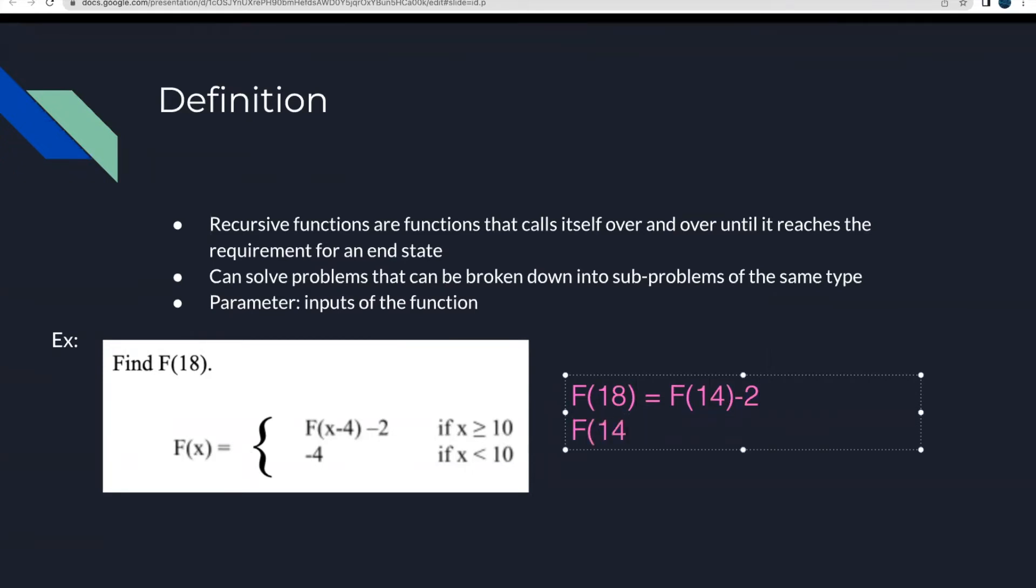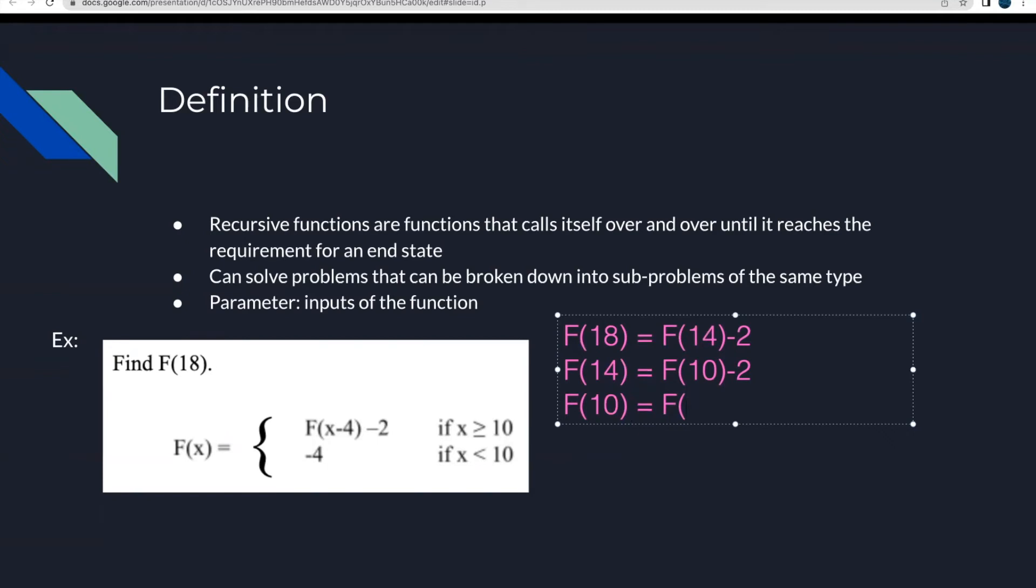And then we're going to keep going until we can solve all these function calls, of course. So F of 14, 14 is still greater than or equal to 10. So we're going to call, we're going to do this call again. And then F of 10 is still greater than or equal to 10. So we're going to call this one more time. And then now you see that 6 is no longer greater than or equal to 10.